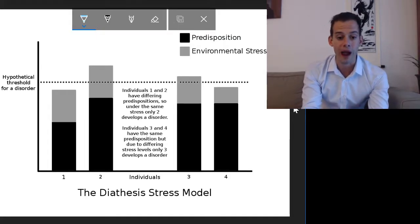This is a way of trying to understand why some people might develop an illness while other people don't. This could be due to either differences in the predisposition or differences in the levels of environmental stress that they experience.